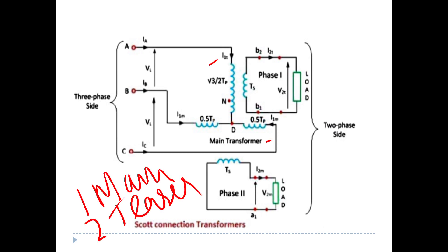Now, looking at the figure, this is the three-phase side EABC. The two-phase load is connected here — phase one and phase two. This is the main transformer. Let me mark this B and C. The main transformer is connected between B and C. There is a center tapping point D.